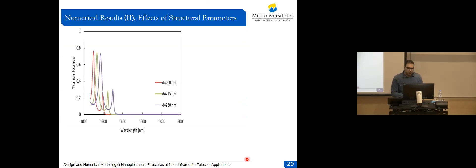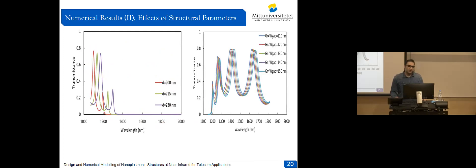Considering the effects of structural parameters: if we reduce the size of the stub to half of its initial value, we can suppress transmission at telecom wavelengths — this is called the line wavelength cutoff filter, defined where transmittance reaches 1%. On the right side, by tuning the distance of the introduced aperture resonator with the adjacent stub resonator and setting their distance equal, we are able to create triple transmission resonance at telecom wavelengths, which has not been reported so far based on noble materials.